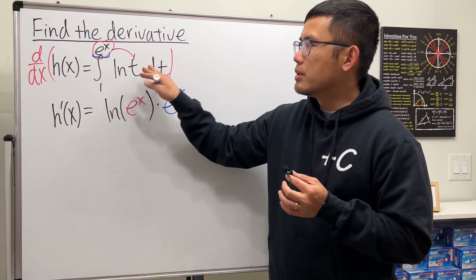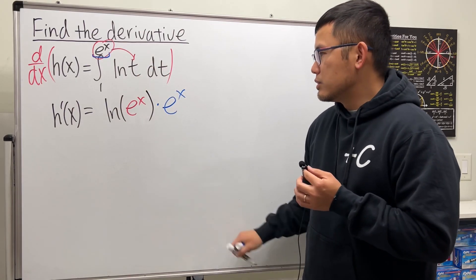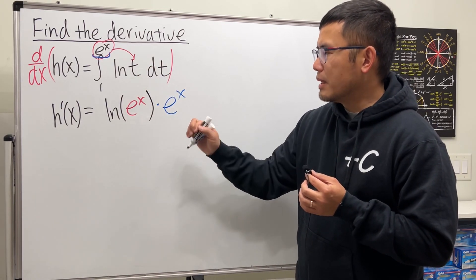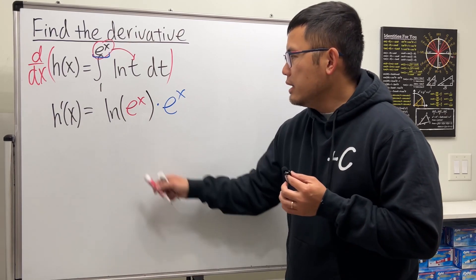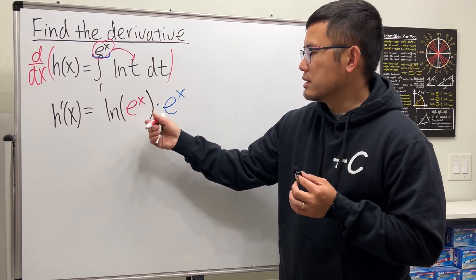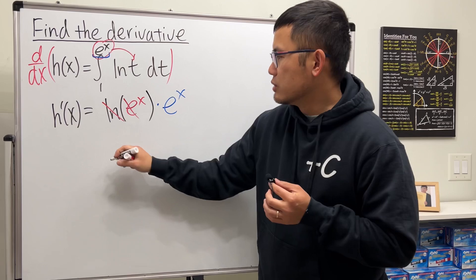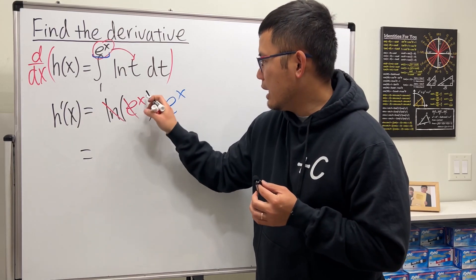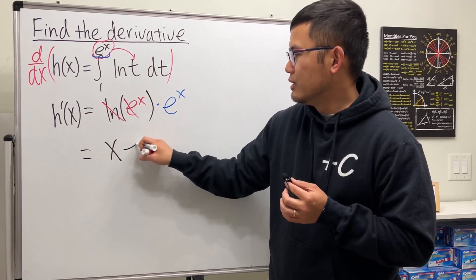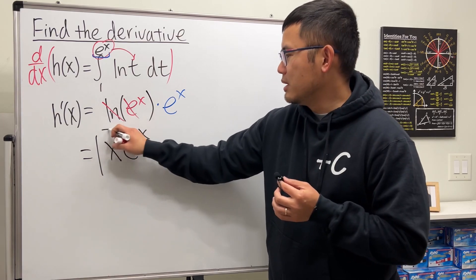That's it. The number doesn't matter. So that's pretty much all you have, but notice, ln of e to the x, they can cancel, so this and that cancel. So finally, we'll just get x e to the x, and that will be the final answer.